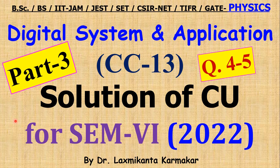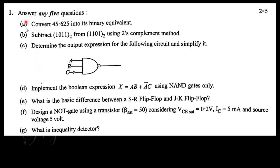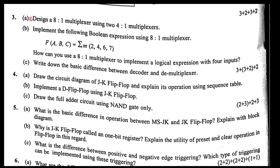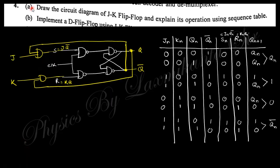Hello, welcome everyone. This is Part 3 of the solution of the Semester 6, 2022 Digital Systems and Applications paper. You can see the total paper — Question 1 was discussed in Part 1, Questions 2 and 3 in Part 2, and this is Part 3. We will discuss Questions 4 and 5 here, and Questions 6 and 7 in the upcoming session. Let's start with Question 4a, which says: draw the circuit diagram of a JK flip-flop and explain its operation using a sequential table.